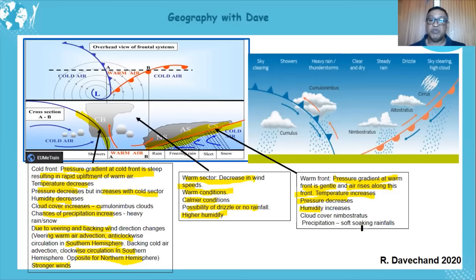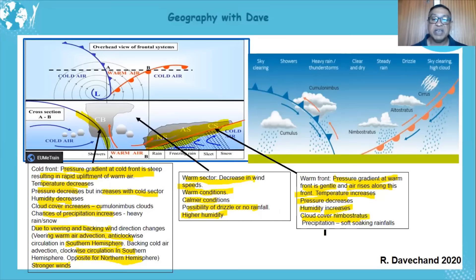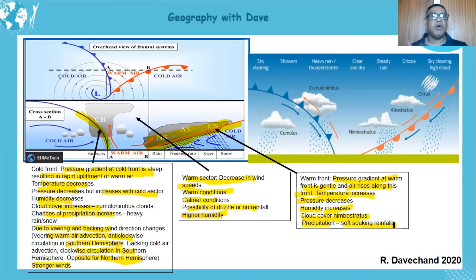Humidity increases as the air moves up, and cloud cover occurs as it cools and condenses. But you won't get huge cumulonimbus clouds — instead, you get more of an angled, stretching cloud — nimbostratus clouds. Precipitation here is soft, soaking rainfall, different from the cold front's heavy rain due to the gentle gradient.